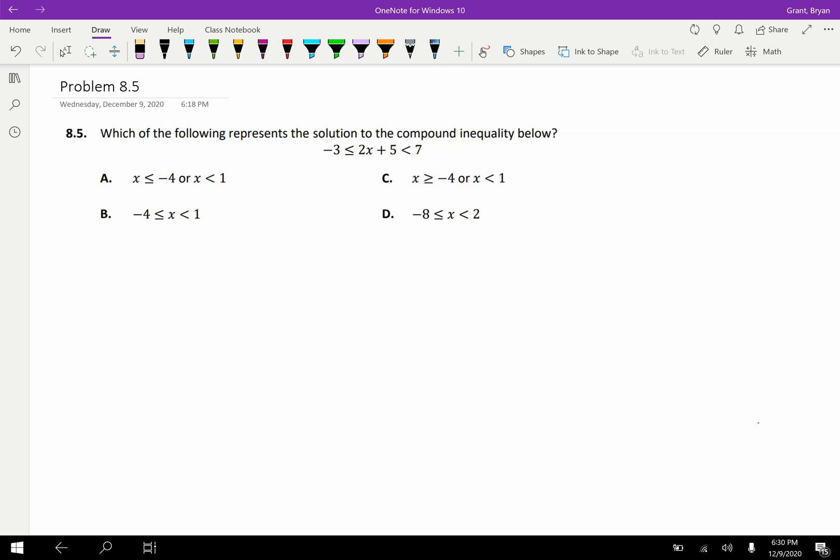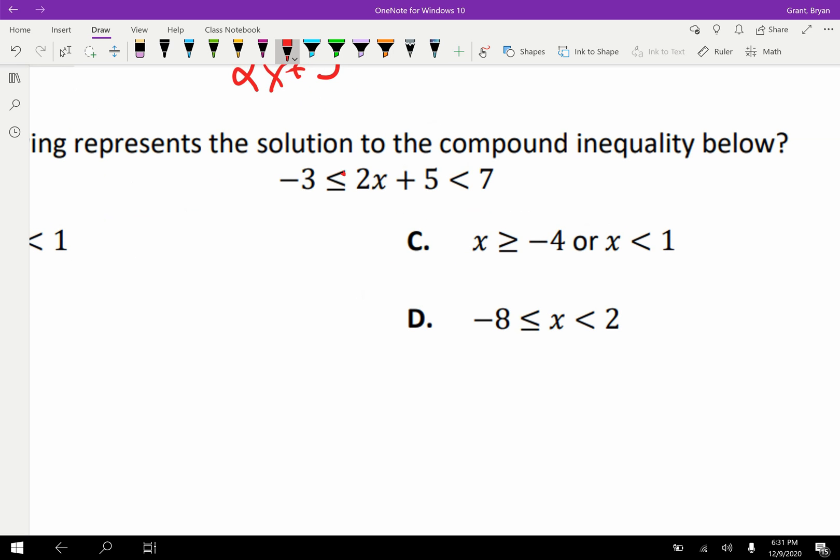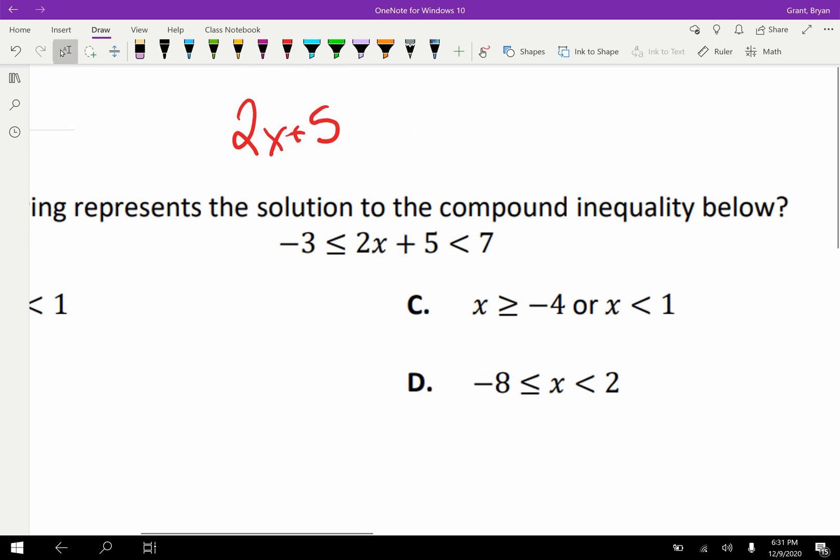This one says negative 3 is less than or equal to 2x plus 5, which in turn is less than 7. Now, there is another way to write this problem. We could have also said that 2x plus 5, and I'm going to actually tackle this guy first. Notice that if we zoom in, the alligator mouth, we'll draw on some cute little teeth right here, is facing the 2x plus 5, so I'm going to make sure the alligator mouth keeps facing, even though it's a greater than instead of less than, negative 3.